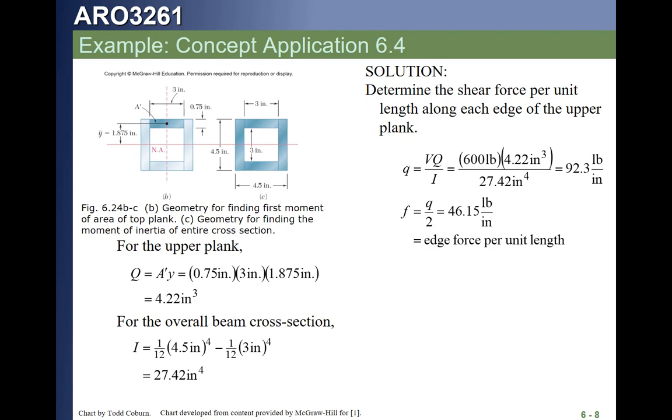Once we have the shear flow, we then calculate the force per inch on each line of nails. This example is using bad nomenclature. It's calling it little f, like a stress. It's not a stress at all. That's just the shear flow Q per line of nails.